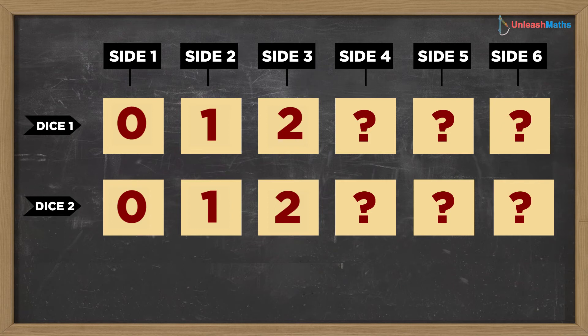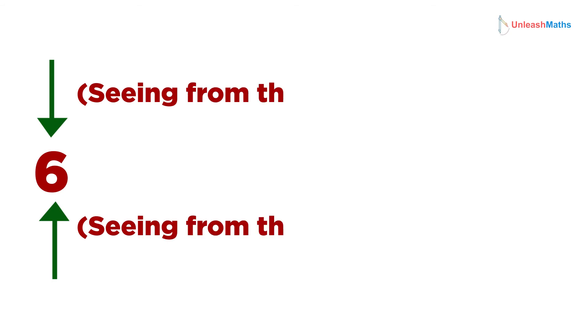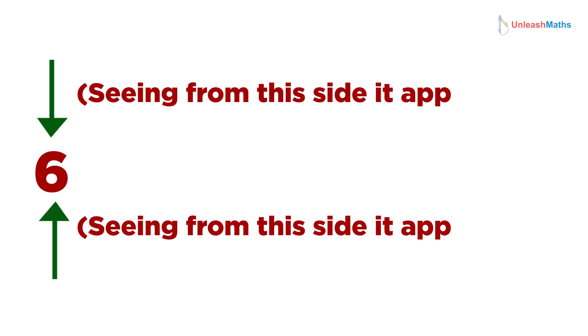The remaining 6 faces need numbers 3, 4, 5, 6, 7, 8, and 9 — that is 7 numbers to fit into 6 faces. To adjust these 7 numbers onto 6 faces, we can use 6 upside down to show 9, or 9 upside down to show 6.